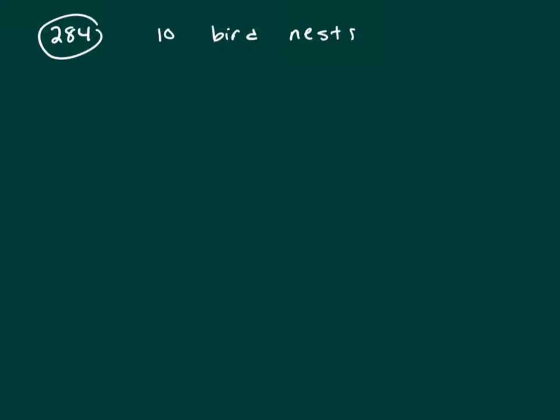So standard deviation for a population is sigma, and it's the square root of the sum of x minus the mean squared over N. So that's how you would calculate it.